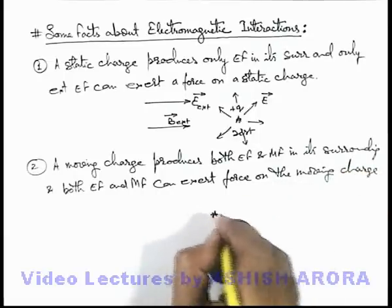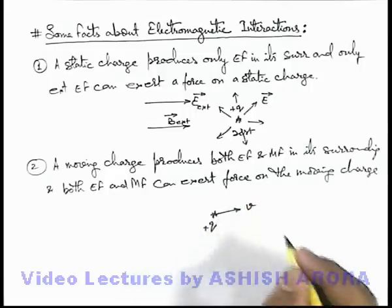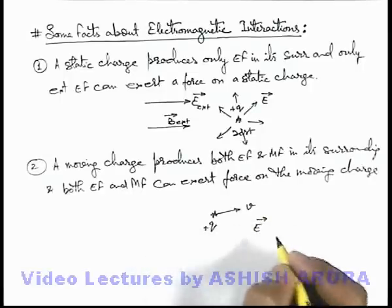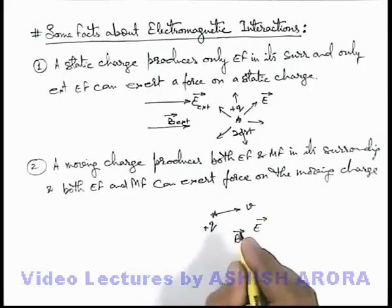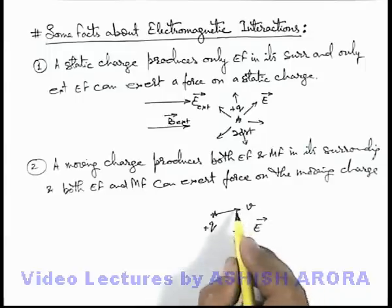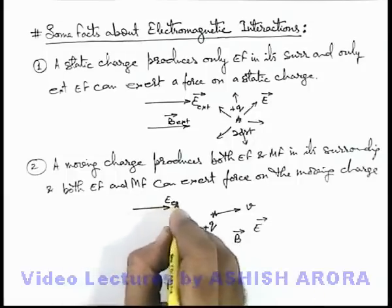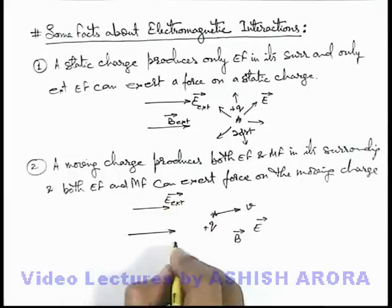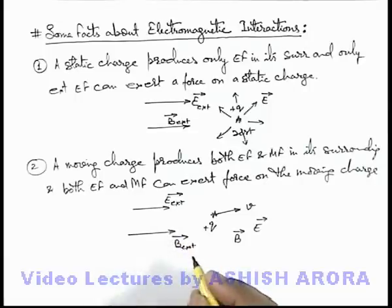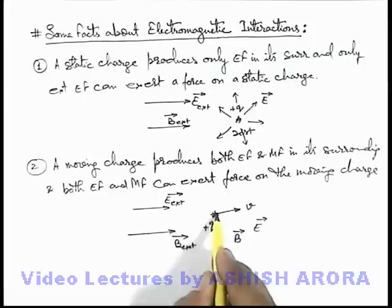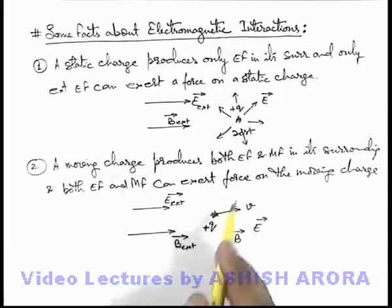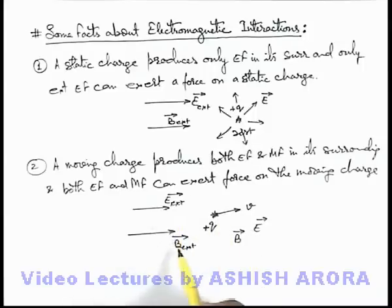Here we can say if we are having a charge plus q moving with a velocity v, then we know it produces E vector in its surrounding as well as it produces B vector in the surrounding, which is given by Biot-Savart's law — we have already studied in the previous section. And in this situation if an external electric field E-external vector and an external magnetic field B-external vector is applied, then both of these external fields can interact with the electric and magnetic fields produced by the moving charge, so both of these will exert a force on this moving charge. So a moving charge produces both fields in the surrounding, that's why it experiences a force due to both kinds of external fields.